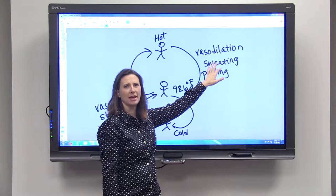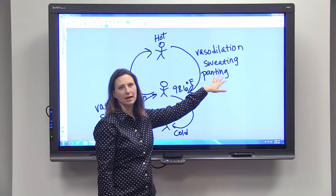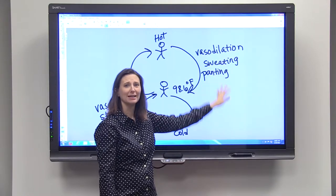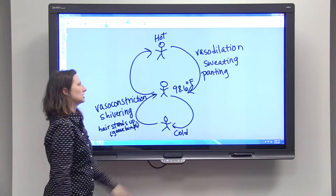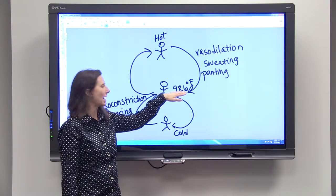Sweating is another way that your body cools you off. Panting. People don't typically pant, but dogs pant because they can't really sweat. So that is the way that your body gets you back to this temperature.